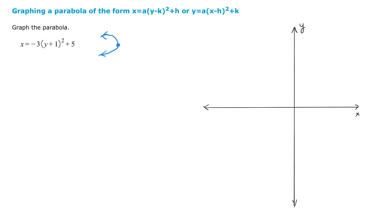And then of course the vertex is h comma k. Let's identify the vertex. The vertex is 5 and negative 1. So we could easily plot that. Let's see. 1, 2, 3, 4, 5, and then negative 1 here.